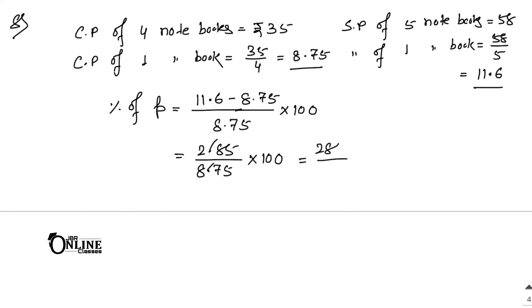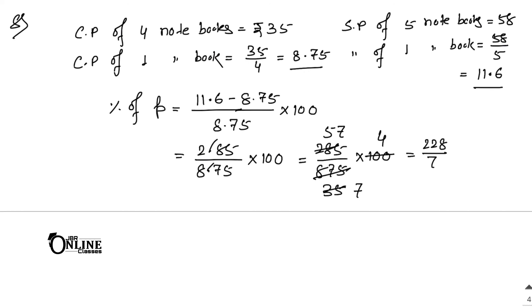After removing decimals: 285 divided by 875, into 100. Dividing numerator and denominator by 25: 875 becomes 35 and 285 becomes 11.4 — so dividing by 5 instead: 35 becomes 7 and 285 becomes 57. That gives 57 into 4, which is 228, divided by 7, equals approximately 32.57%, or as a mixed fraction: 32 and 4/7 percent.